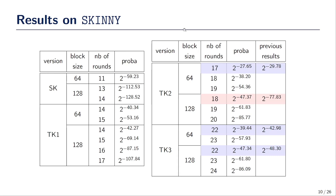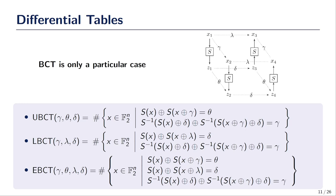How did we get all those results? First, to search for the best Boomerangs, we need to be able to precisely compute the probability of a Boomerang characteristic. To do that, the BCT is not enough — we need much more differential tables. In particular, we need three extra tables: the UBCT for upper BCT, the LBCT for lower BCT, and the EBCT for extended BCT. All those tables correspond to one particular case and depend on which differences are set to specific values and which differences are free.